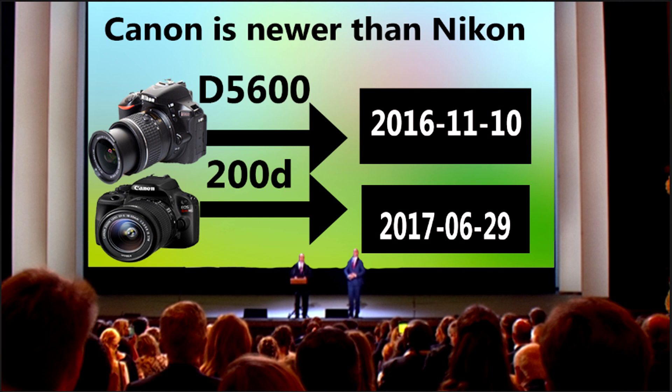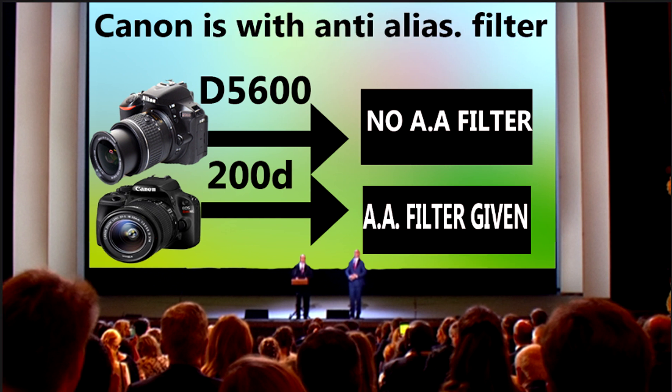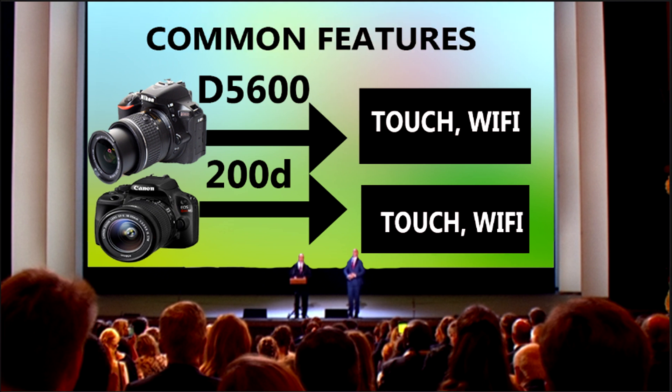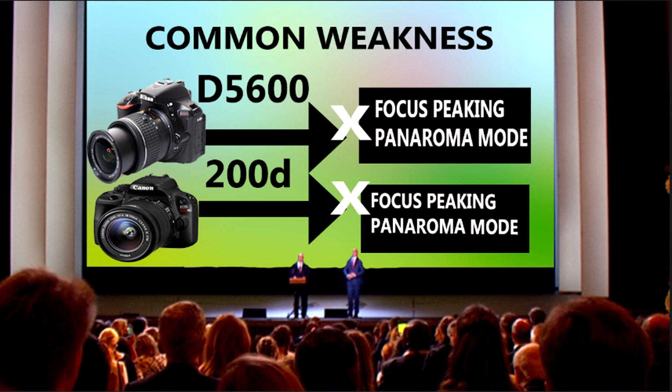Canon gives you an anti-aliasing filter, which is not available on the Nikon D5600. Both cameras offer a touchscreen and WiFi. A common weakness of both cameras is that neither offers focus peaking or panorama mode.